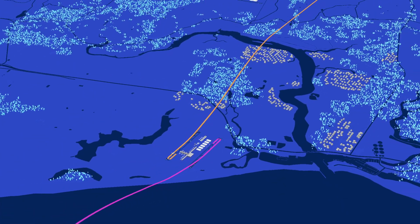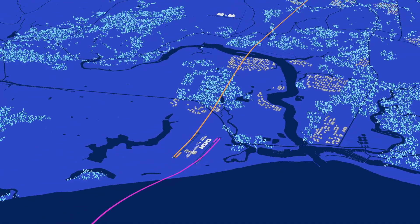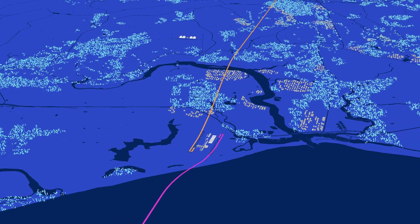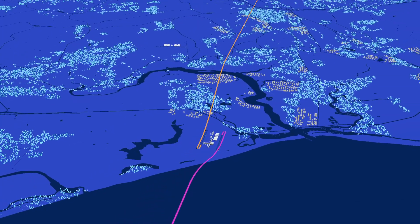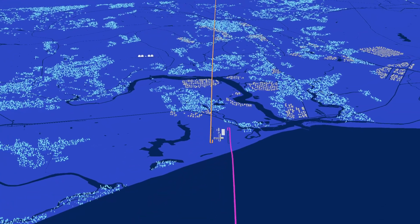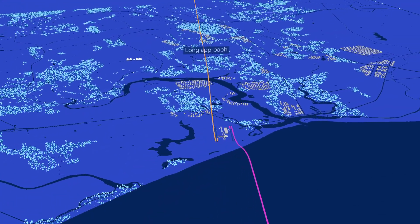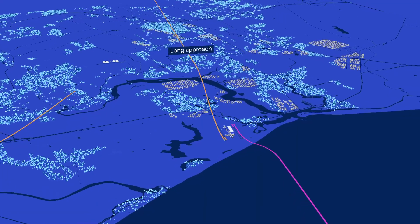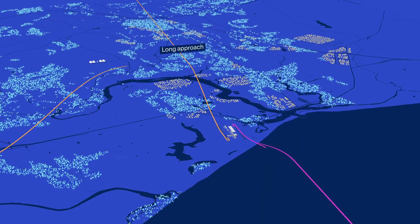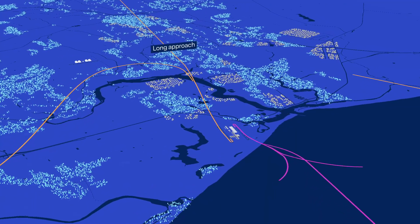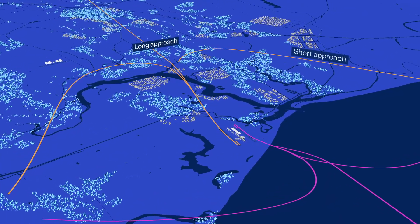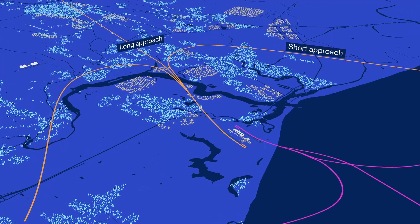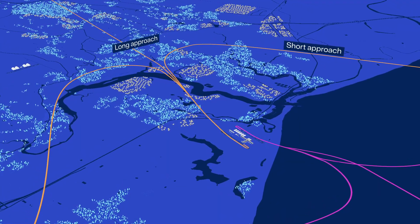Planes follow different flight paths depending on where they're going or coming from and the navigation technology they use. Some planes may follow a long approach, while others, equipped with advanced navigation systems, can be authorised to use shorter, more direct flight paths to the runway.